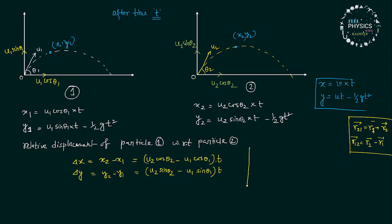So, from these two equations, if we find the common displacement equation, delta y by delta x will be u2 sinθ2 minus u1 sinθ1 divided by u2 cosθ2 minus u1 cosθ1. And there will be no time term. So, the whole right-hand side is constant, equal to m, say.